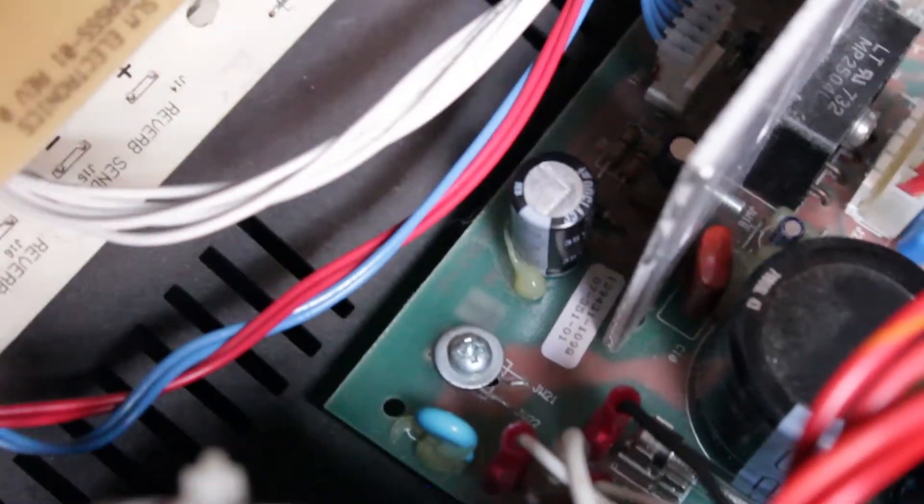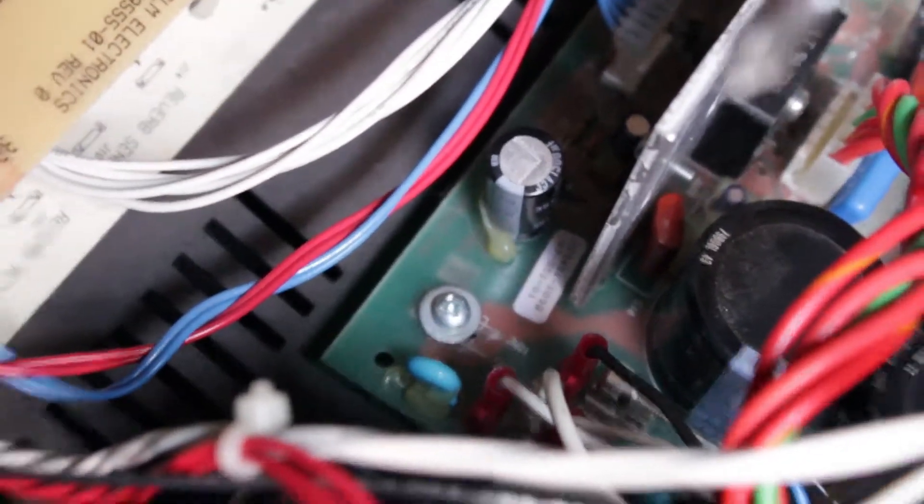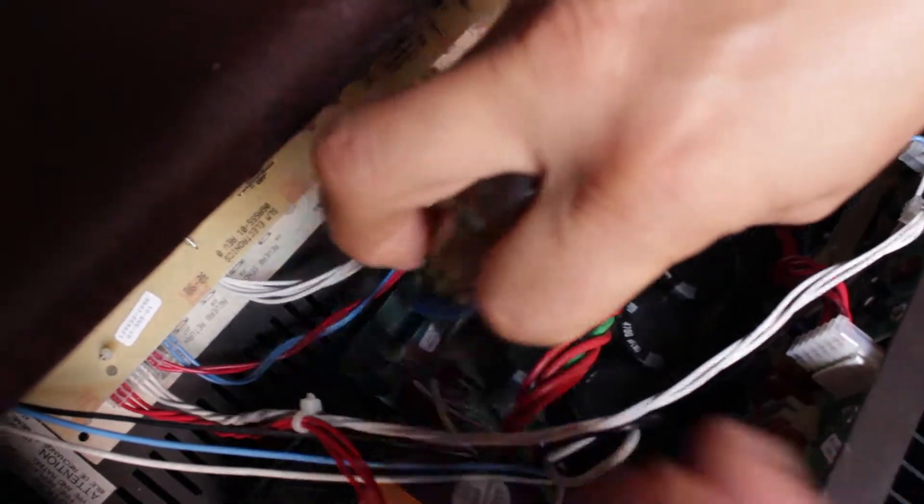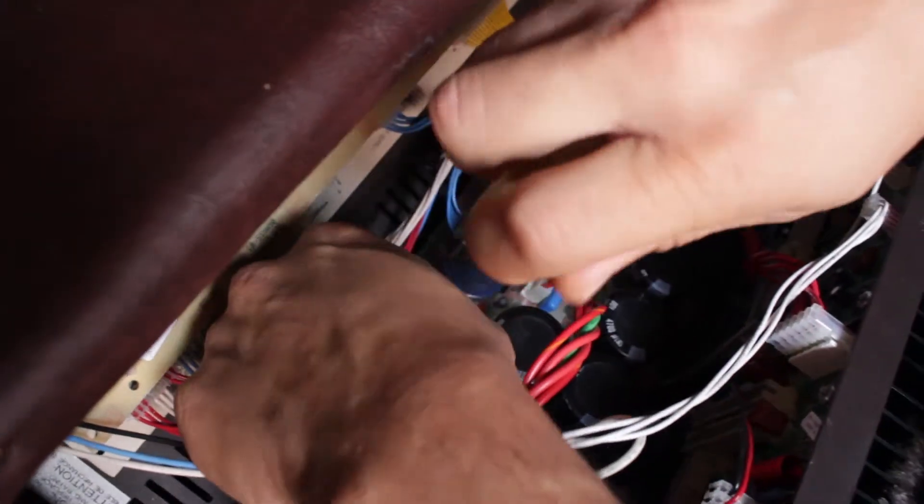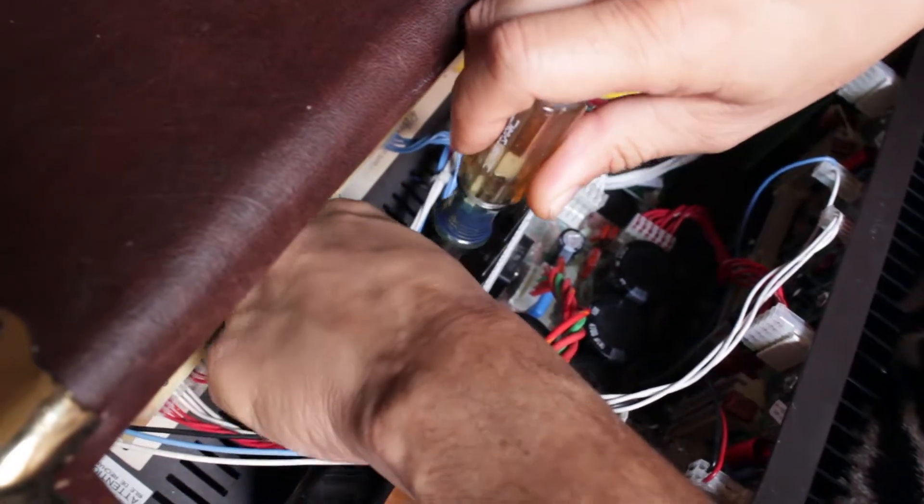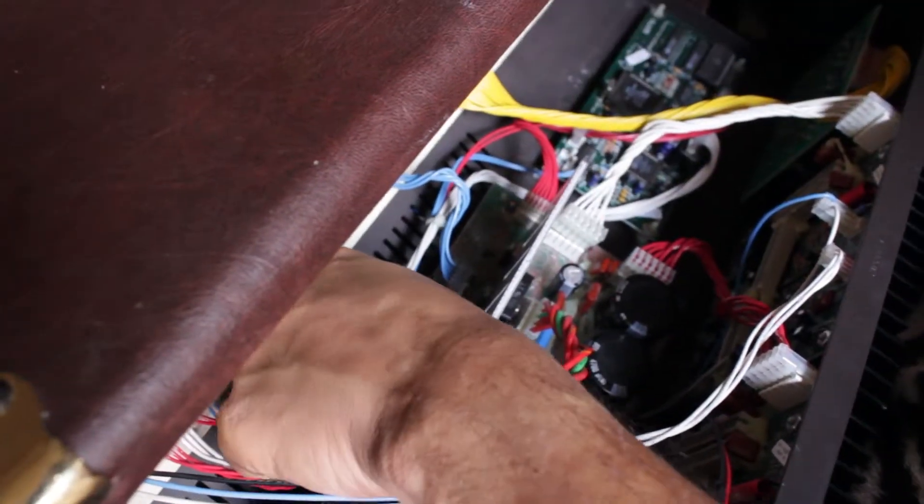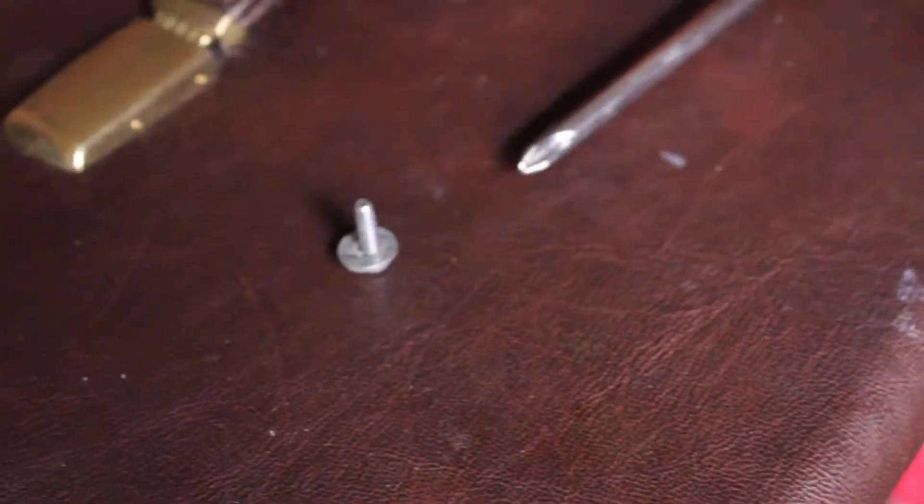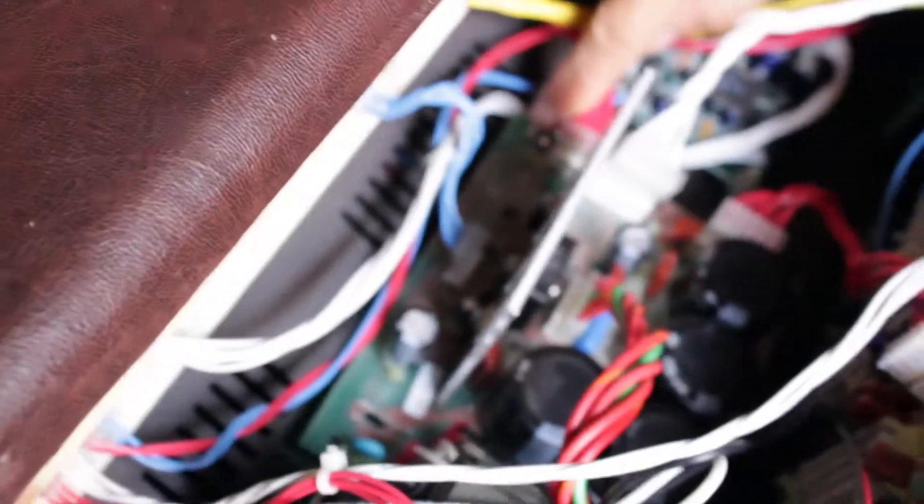There's a screw right there. You're going to have to get yourself a Phillips screwdriver and just get that screw out. I already got them pretty loose. There's a washer on that screw. Just take it out.